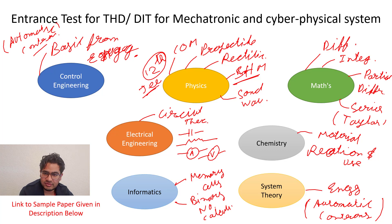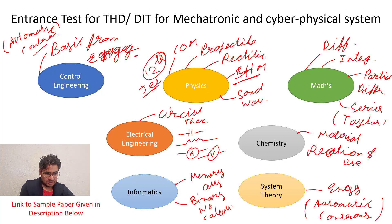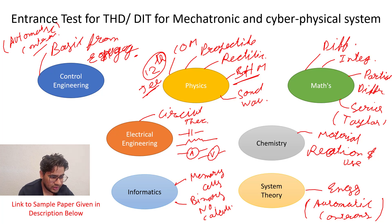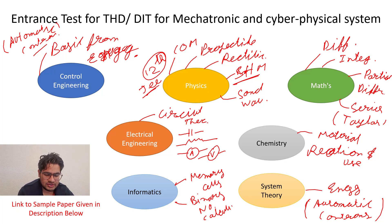For Maths, it comes from Math 1, Math 2, and Math 3 of your engineering: differentiation, integration, partial differentiation, series, and Laplace. You will get around two questions from differentiation, two from integration, and some from partial differentiation — which will be clubbed with Control Engineering questions, because in control engineering there are functions solved by partial differentiation. So partial differentiation will be clubbed with Control Engineering and System Theory sections.